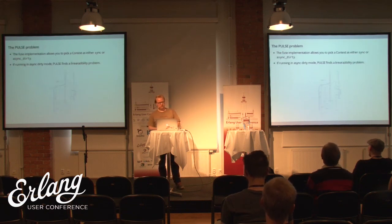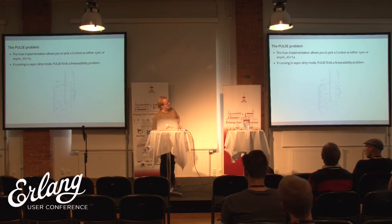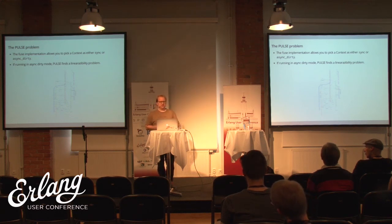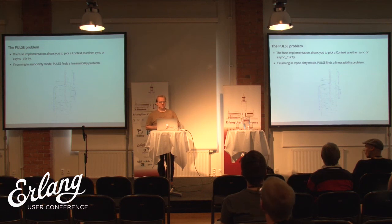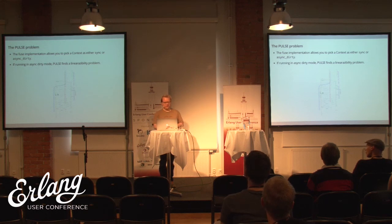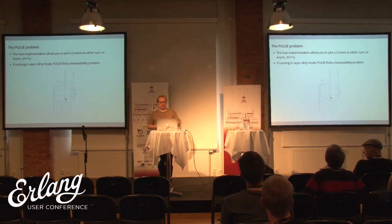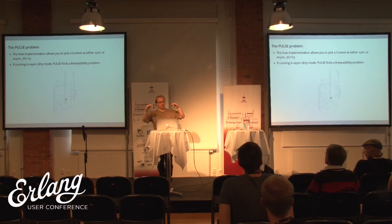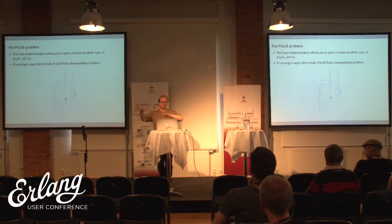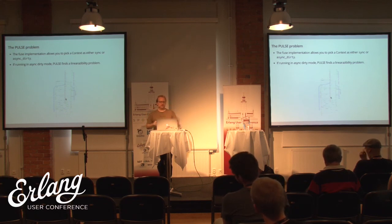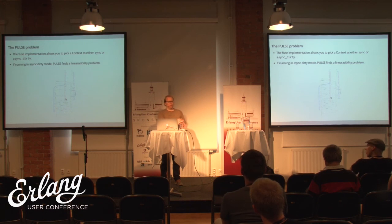One problem found when running Fuse with PULSE and using the async dirty access context: it finds the code is not linearizable. You get a diagram that you stare at for about 20 minutes and then figure out where your race condition is. When PULSE builds a counter-example it can draw these diagrams showing the order in which the scheduler has executed different things, allowing you to derive what your race condition is.